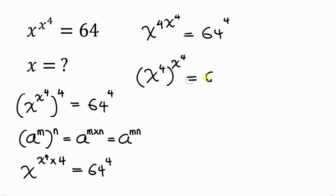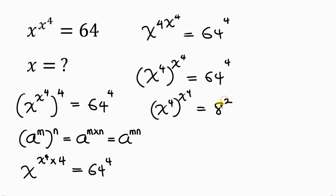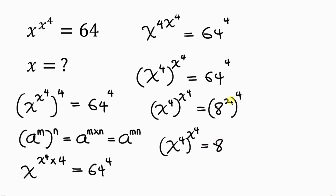Our next step is to simplify the right-hand side. We have X to the power of 4, raised to the X to the power of 4, equal to 64 raised to the power of 4. Since 64 is the same as 8 squared, we get 8 squared raised to the power of 4, and multiplying those powers — 2 times 4 — gives 8 to the power of 8.